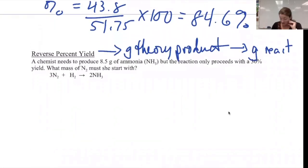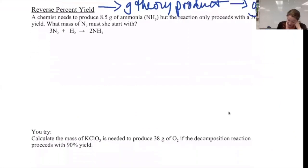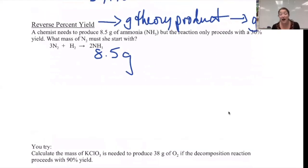In other words, for this reaction, if I actually want to get out 8.5 grams of NH3 and it only has a 30 percent yield, I'm going to have to aim for a lot higher than 8.5 grams. 8.5 grams is my actual.